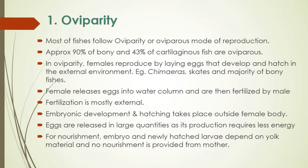Examples of oviparous fishes include skates and the majority of bony fishes. In oviparity, the female releases eggs or gametes into the water column, which are then fertilized by the male by spraying milt. Fertilization is mostly external, and development and hatching take place outside the female body. Eggs are released in large quantities, as their production requires less energy, and thus fecundity is usually very high. Embryos and newly hatched larvae depend on yolk material for nourishment, with no provision from the mother.